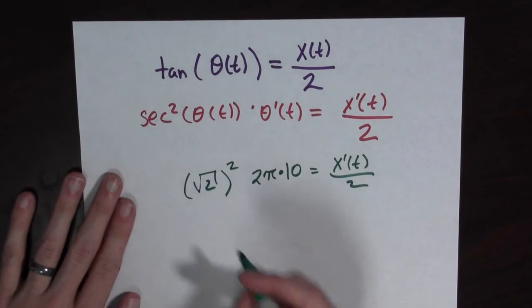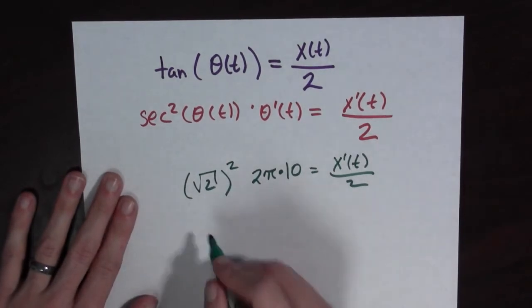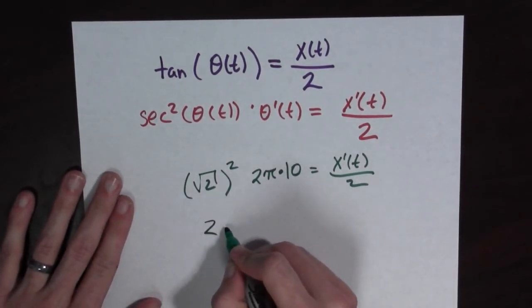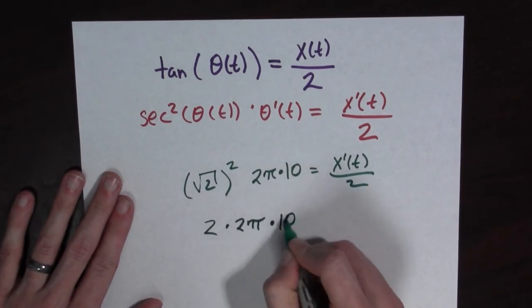Oh this is outstanding. Because look what I have here. I have the square root of 2 squared is equal to 2 times 2π times 10.